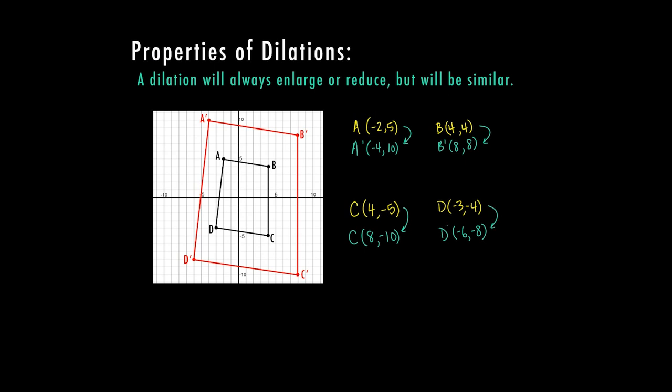From A to A prime, my X goes from negative 2 to negative 4, my Y increases from 5 to 10. So both of those are times 2. My B to B prime, both points are also times 2. I'm noticing it looks like the same pattern for each one. So that means that my scale factor is times 2. So that is my K.